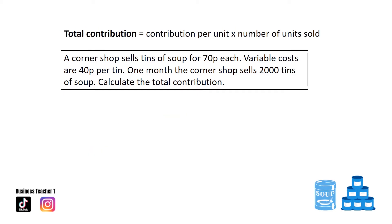Now we're looking at the total contribution — that's contribution per unit times by the number of units sold. The corner shop sells tins of soup for 70p each, variable costs are 40p per tin, and one month the corner shop sells 2,000 tins of soup. Calculate the total contribution. That's 30p times 2,000 tins sold in that month, which equals £600 total contribution.